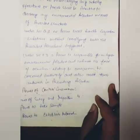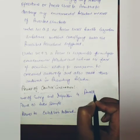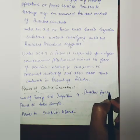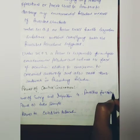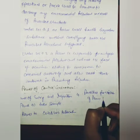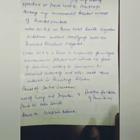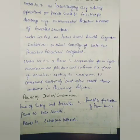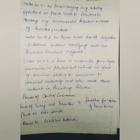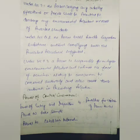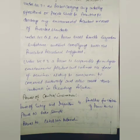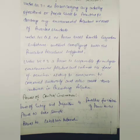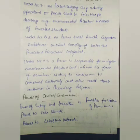The fourth provision covers penalties for violating the provisions of this Act. Under Section 15.5, any person failing to comply with any provision of this Act shall be punishable with imprisonment for a term which may extend up to 5 years, or a fine which may extend to 1 lakh rupees, or both. So these are the important points of the Environment Protection Act 1986. Thank you very much.